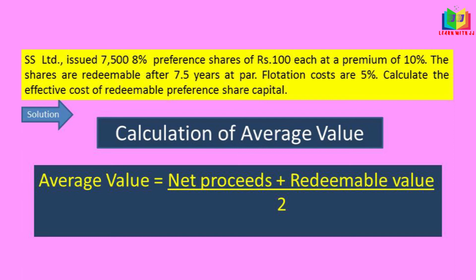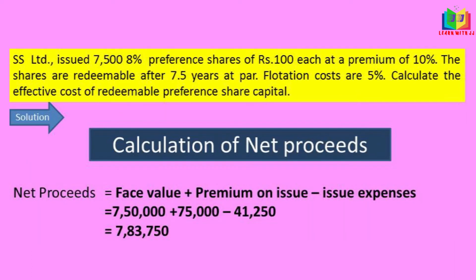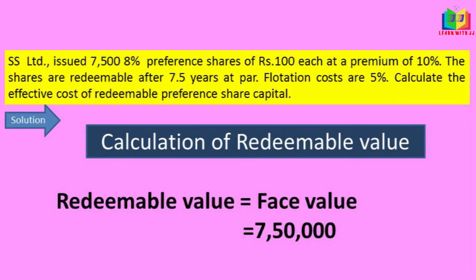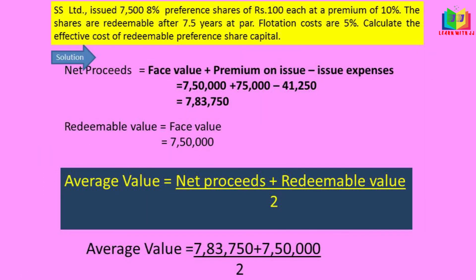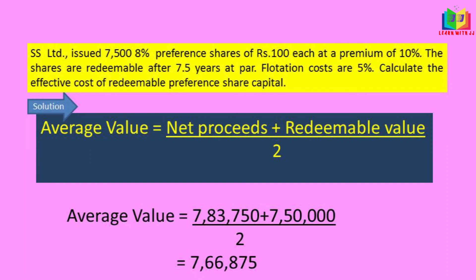Next, we have to calculate the average value. The formula is net proceeds plus redeemable value divided by 2. Net proceeds is face value plus share premium minus issue expenses: 7,50,000 plus 75,000 minus 41,250 equals 7,83,750. The redeemable value is the face value 7,50,000 since it is redeemed at par. The average of net proceeds and redeemable value is 7,66,875.